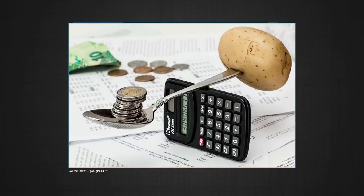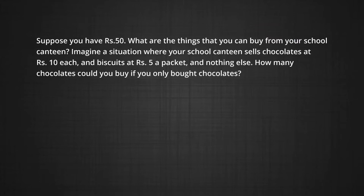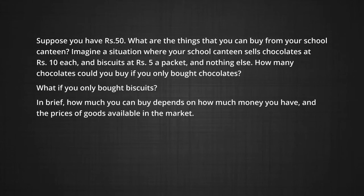What are the combinations of goods that the consumer can afford to buy? Suppose you have rupees 50. What are the things that you can buy from your school canteen? Imagine a situation where your school canteen sells chocolates at rupees 10 each and biscuits at rupees 5 a packet. How many chocolates could you buy if you only bought chocolates? You could buy at most five chocolates. If you bought only biscuits, you would at most buy 10 packets. How much you can buy depends on how much money you have and the prices of goods available in the market.